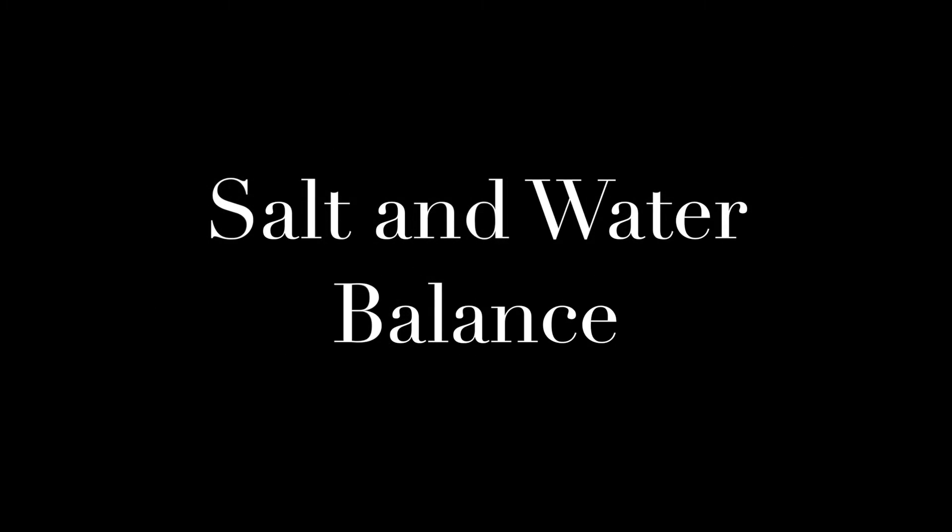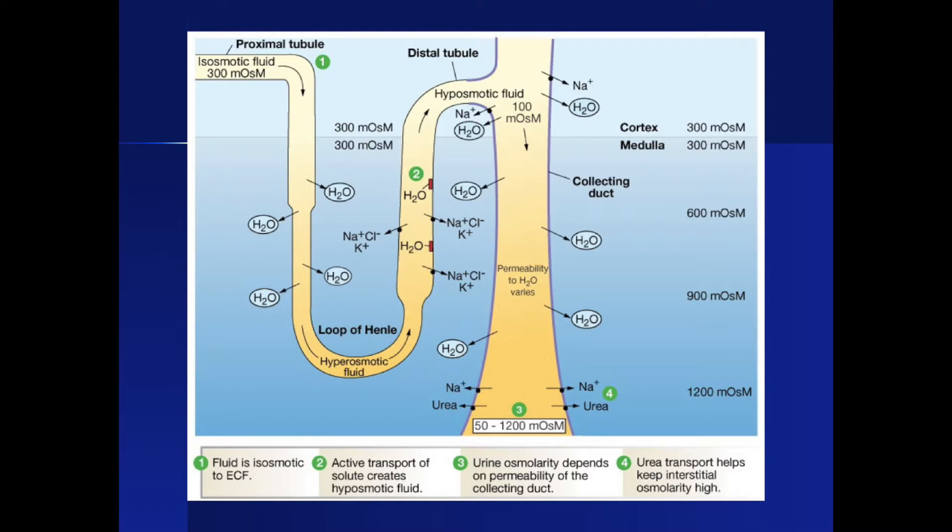Now we will move into our discussion on salt and water balance. The osmolarity of the urine changes as it travels through the nephron, depending on the permeability of the tubule. In the proximal tubule, the fluid is isoosmotic. Then it becomes hyperosmotic for a time in the loop of Henle, after which it becomes hypoosmotic because of the active transport of the solute out of the tubule into the interstitial fluid. The osmolarity in the collecting duct isn't consistent and changes depending on the body's need.